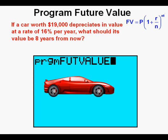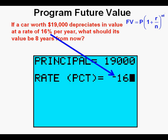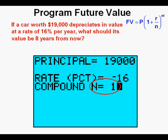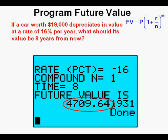We'll look at one last type of application. If a car worth $19,000 today depreciates in value at a rate of 16% per year, what should its value be 8 years from now? The principal or starting amount is $19,000. The rate might be a little tricky — it's negative 16% because it's decreasing at a 16% annual rate. Make sure when you have decay or decline to use a negative sign in front of the percentage. The N for compounding is 1 and the time is 8 for 8 years. Press enter and the value of the car 8 years later will be a little over $4,700.